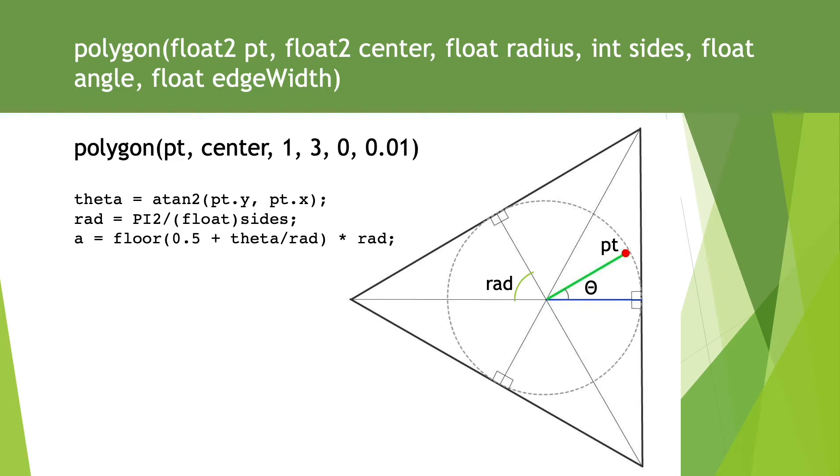We choose which triangle using floor(0.5 + theta/rad) times rad. This selects which of the lines radiating from the centre to base the test angle on.